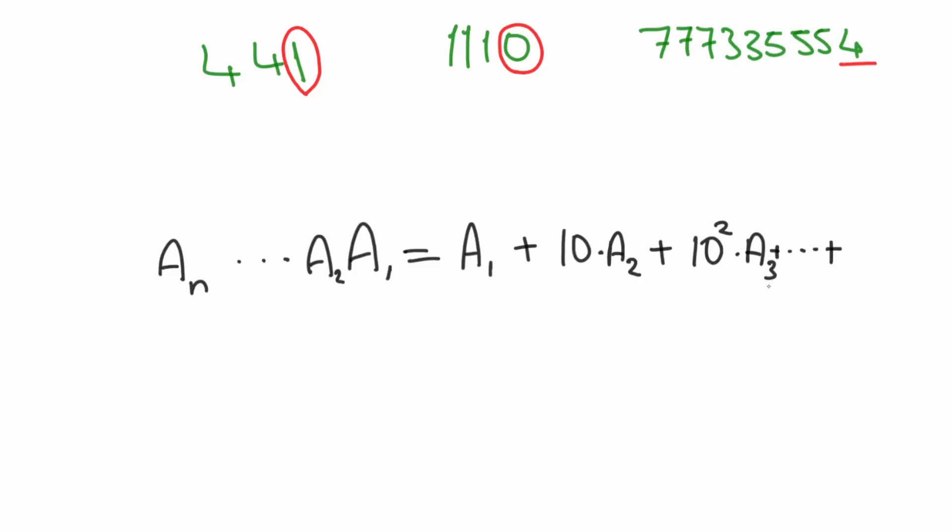If we have 3 here, the power of the 10 is 2, so it's 3 minus 1. So the rule is 10 to the n minus 1 times an.